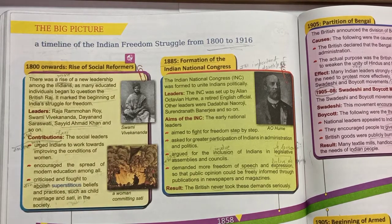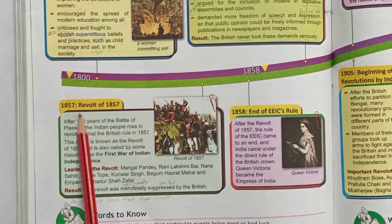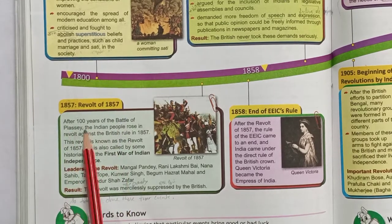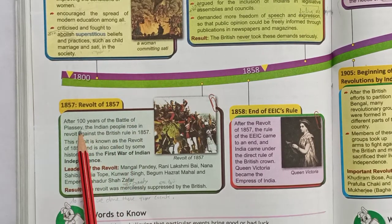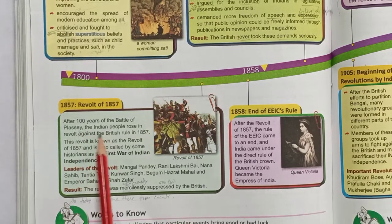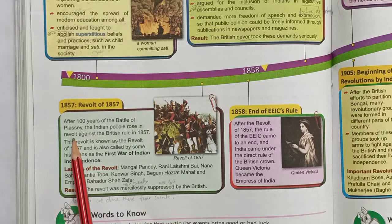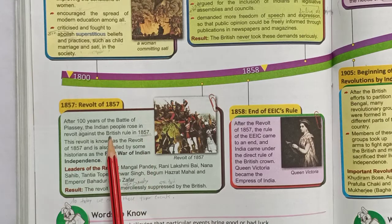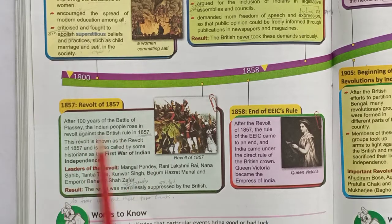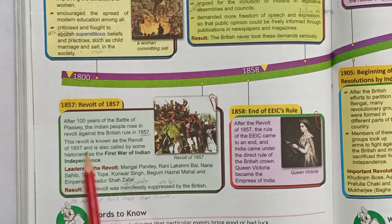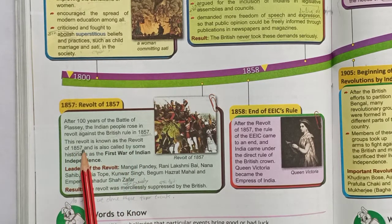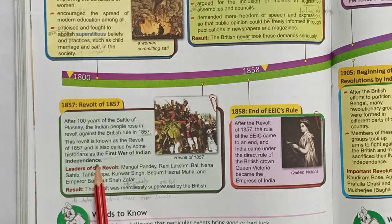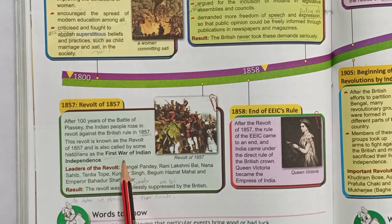What was the next movement? We have already studied the Revolt of 1857. After 100 years of the Battle of Plassey, the Indian people rose in revolt against British rule. This revolt is known as the Revolt of 1857. It is also called by some historians as the First War of Indian Independence. We have already read about this in Chapter 13.